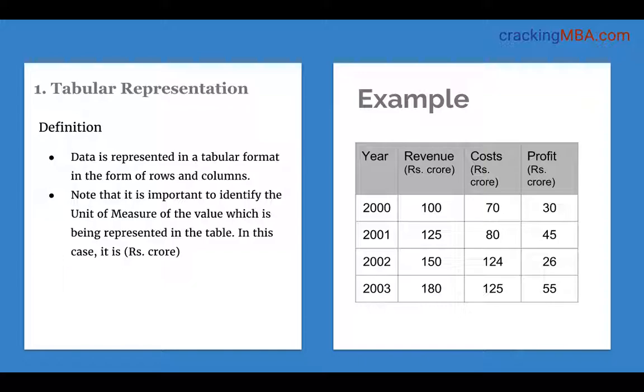Tabular representation is one of the most common types of representation of data. In this, the data is represented in rows and columns. The intersection of a row and column is the value that is represented by this table. Let's look at a table given here.